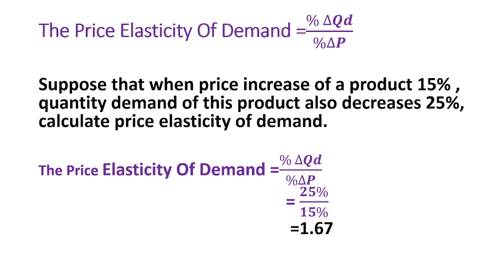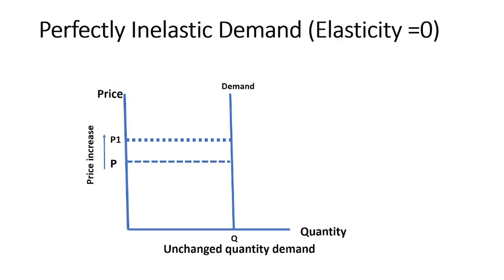Now we'll learn about perfectly inelastic demand. In perfectly inelastic demand, elasticity equals 0 and the demand curve is vertical, because the responsiveness of quantity demanded remains unchanged due to any price change.